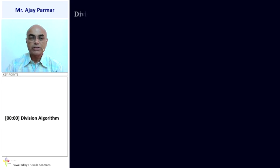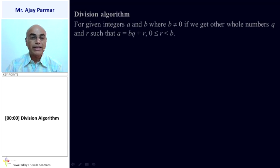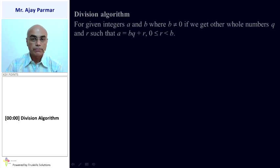In the beginning of this chapter, let us study about the division algorithm. For any given numbers A and B, where B is not zero — that means it is a non-zero number — if we get another whole number such that Q and R, then we can write down that A is equal to BQ plus R, where zero is less than or equal to R, which is less than B.